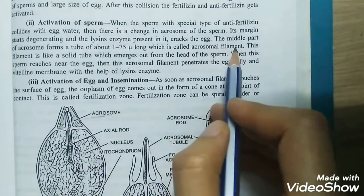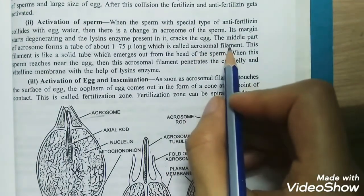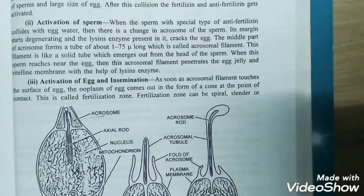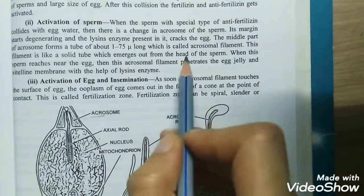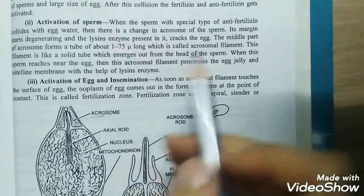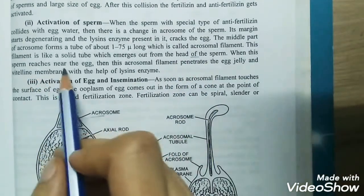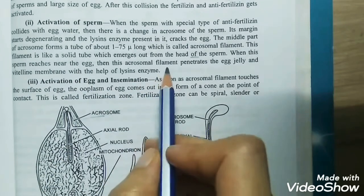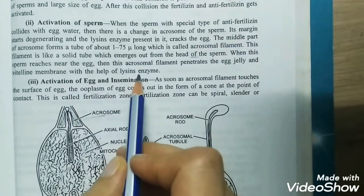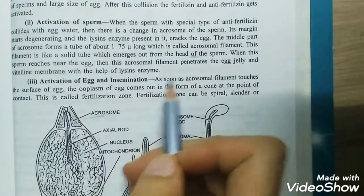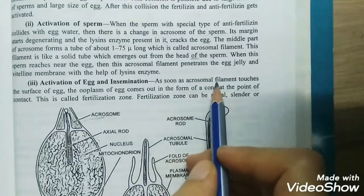Along with this acrosomal membrane degeneration, it cracks the egg. Afterwards, the middle part of the acrosome forms a tube of about 1 to 75 micrometers long, which is called the acrosomal filament. The acrosomal filament is like a solid tube which emerges out from the head of the sperm. When the sperm reaches near the egg, this acrosomal filament penetrates the egg jelly and the vitelline membrane with the help of lytic enzymes.